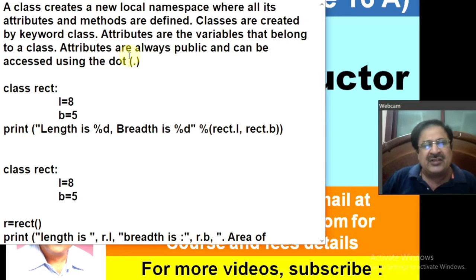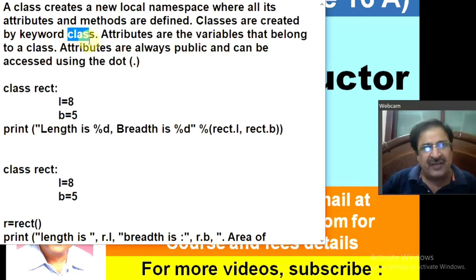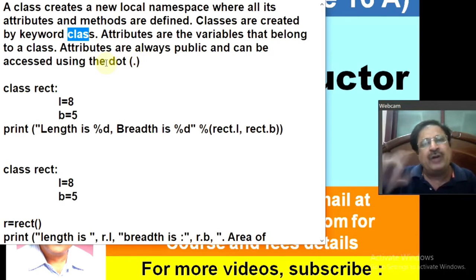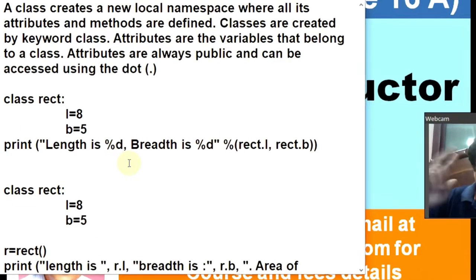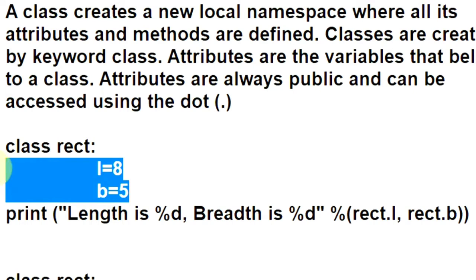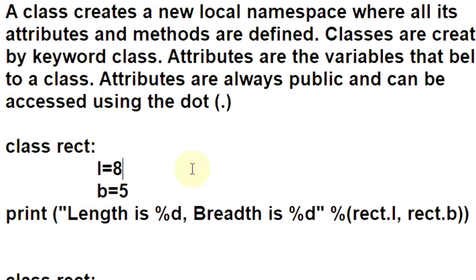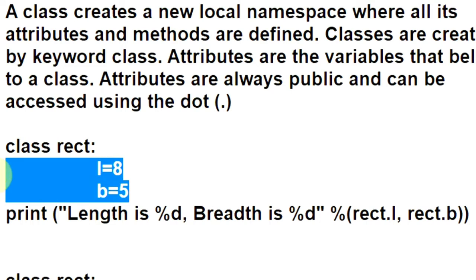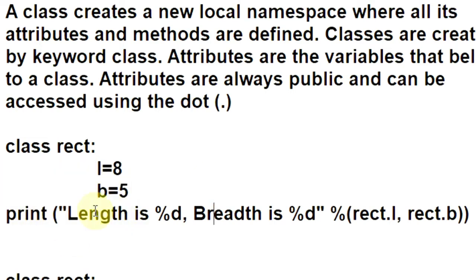A class begins with the keyword 'class' and the attributes — that is, the variables or methods — can be accessed by using a period, that is a dot, between a class or its instance. This is the simplest class without any function but with two attributes. This is class REC with two attributes, length and breadth, initialized to 8 and 5 respectively. These are basically class variables.